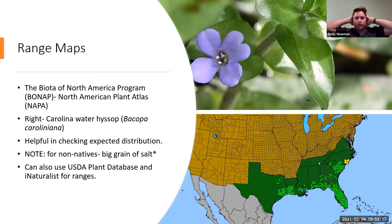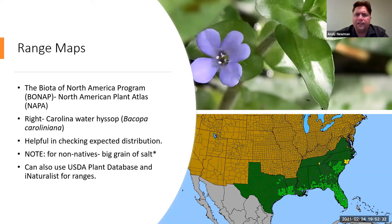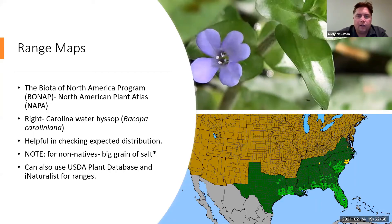Range maps are another great resource. I use BONAP — Biota of North America. It stays a lot more up to date than the USDA plant database. For example, Carolina water hyssop is pretty much in the Atlantic Gulf Coastal Plain area — it's pretty rare inland and normally restricted right along the coast. So if you find it in North Texas, it's possible, but probably not super likely. Range maps really help you gauge whether a plant species is probable or improbable in an area you're in. A big note: for a lot of non-native species with high invasive potential, they can show up almost anywhere.